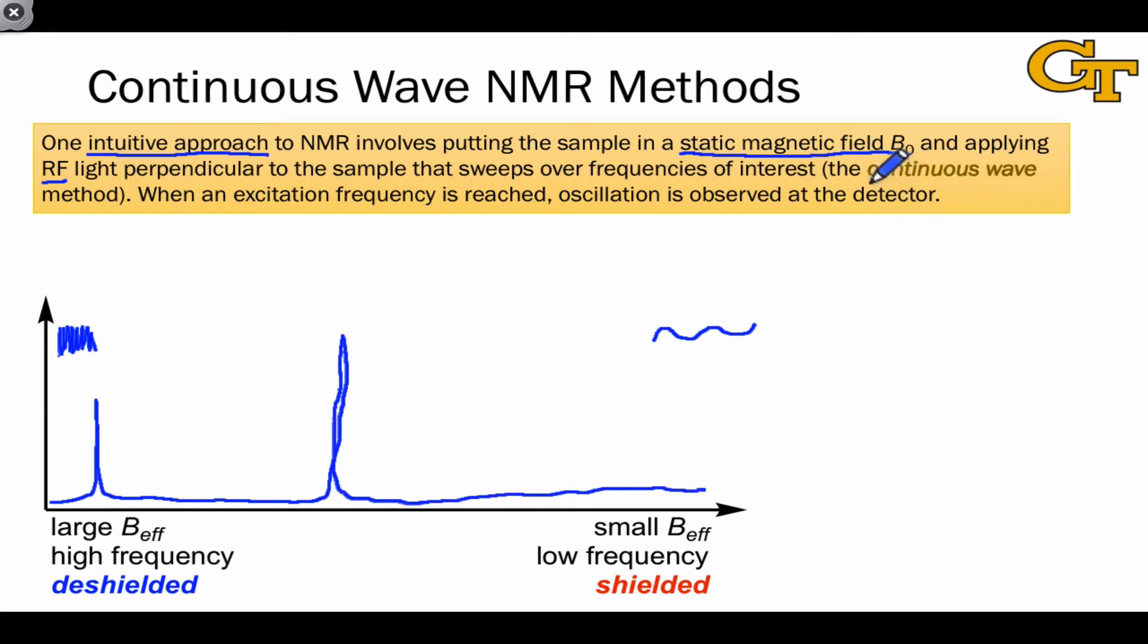This strategy is referred to as continuous wave NMR since we're applying radio frequency power throughout the experiment. This takes a long time because we have to go all the way from high to low frequency, and for the vast majority of the time nothing's happening since we're not at a resonant frequency.